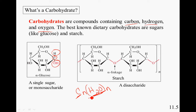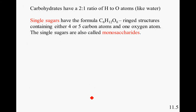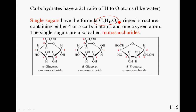Now we will dive further into the structures of carbs. Simple sugars have a formula C6H12O6. Ring structures contain either four or five carbon atoms and one oxygen atom.